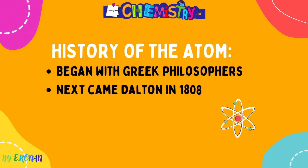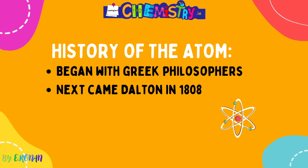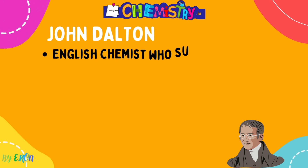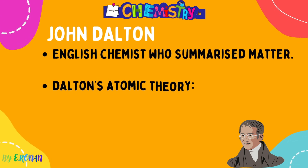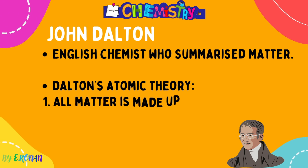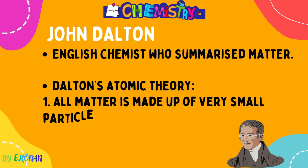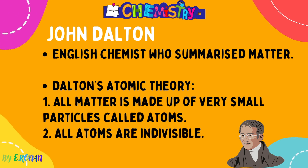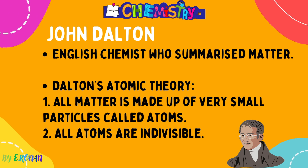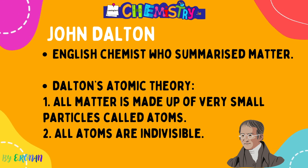The History of the Atom began with Greek philosophers, and next came John Dalton in 1808. While you will never be asked explicitly for the dates, it is handy to recognise them if they appear in an exam. John Dalton was an English chemist who first summarised matter in his Atomic Theory: all matter is made up of very small particles called atoms, and atoms are indivisible, meaning they cannot be broken down into anything simpler by chemical means.